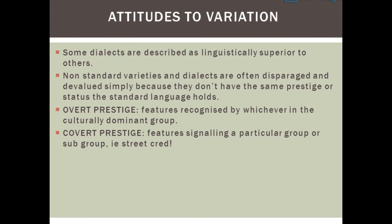Attitudes to variation. Some dialects are described as linguistically superior to others. Non-standard varieties and dialects are often disparaged and devalued simply because they don't have the same prestige or status the standard language holds. Overt prestige refers to features recognised by the culturally dominant group. Covert prestige refers to features signalling a particular group or sub-group — a kind of street cred.